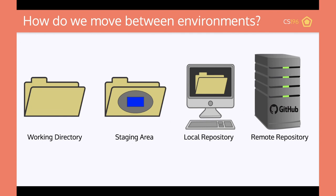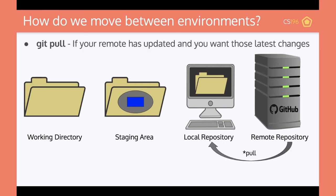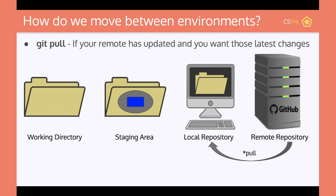Now let's say we made a change we want to pull back the other way. The change is in the remote repository, and to pull it back down we run git pull. Git pull says: if the remote has any updates and you want those changes, it will take those changes and load them into the local repository. Now it's back on the local repository, and remember that the local repository is in the working directory — so any changes made to the local repository show up in the working directory. The staging area is just Git's idea of what's going to be committed in the next commit.